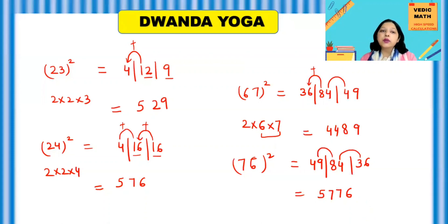So with the help of Dwanda Yoga, you can find the square of any 2 digit number very quickly and very easily within few seconds. So apply Dwanda Yoga to find a square of any 2 digit number in few seconds. Thank you.